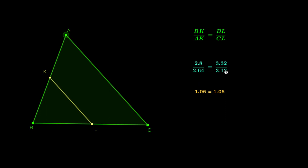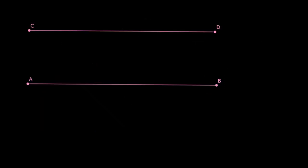We can generalize this: if a line is drawn parallel to any one side of a triangle to intersect the other two sides in distinct points, then the other two sides are divided in the same ratio. In the ancient period, this was proved by the famous Greek mathematician Thales.